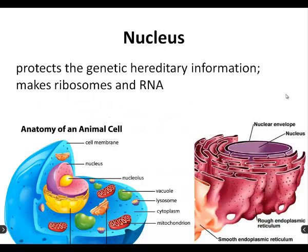Nucleus — that organelle that everybody thinks is way more important than it is. Make sure you get it on your worksheet. It protects genetic hereditary information, and it also makes ribosomes and RNA. Make sure you have nucleus somewhere randomly on your bingo board as well. As you can see in the picture, it's very large and usually somewhat centrally located, with the membranous reticulum thing around it as well.